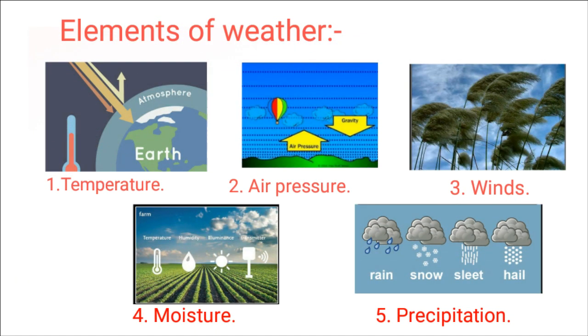Today we are going to learn about the elements of weather. There are 5 elements of weather: temperature, air pressure, winds, moisture, and precipitation.